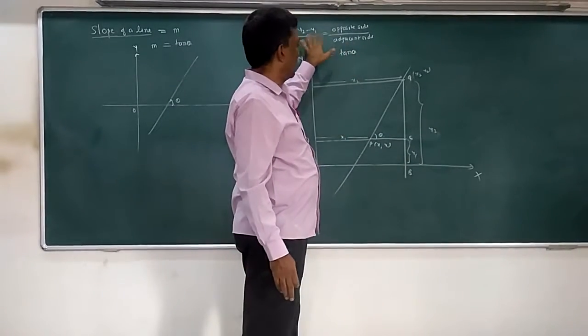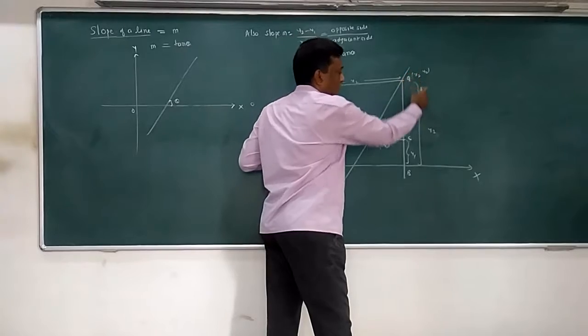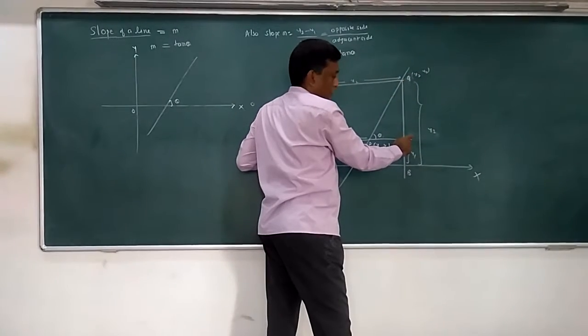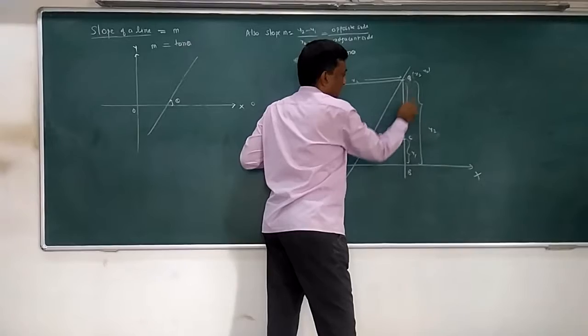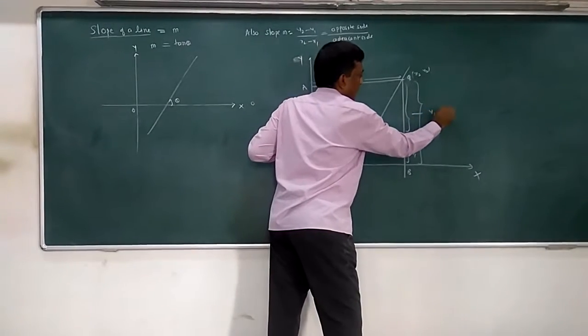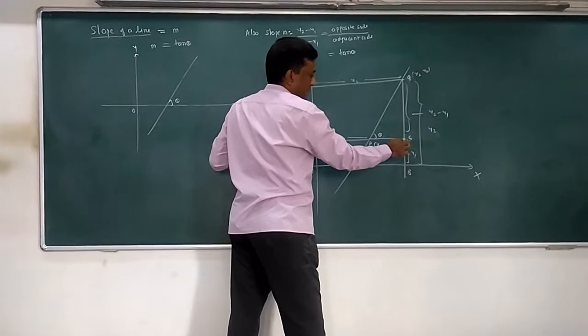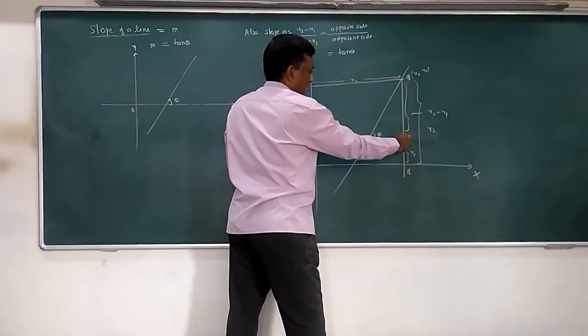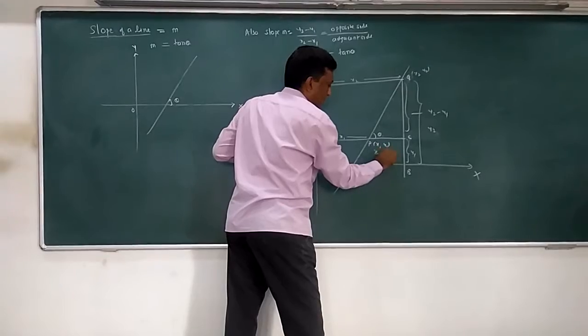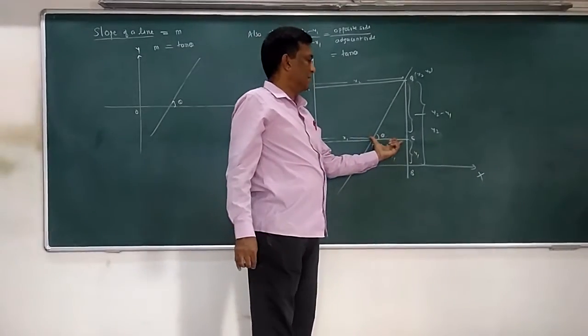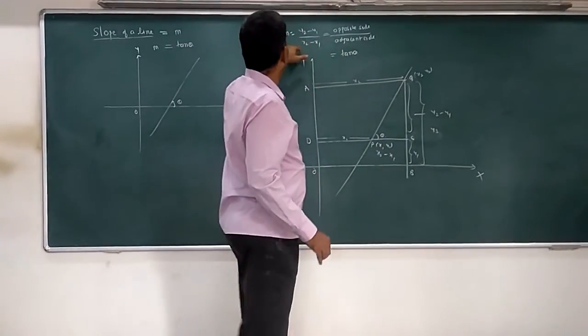So basically, you get y2 minus y1. If you see properly, y2 minus y1 gives you length QC. This is your y2 minus y1. And if you talk about this length PC, that is x2 total length minus x1. So this length is x2 minus x1, which is nothing but adjacent side.